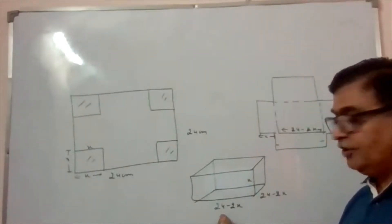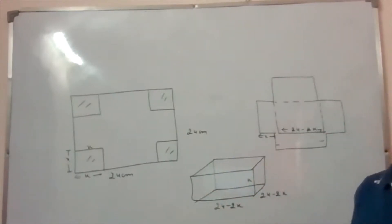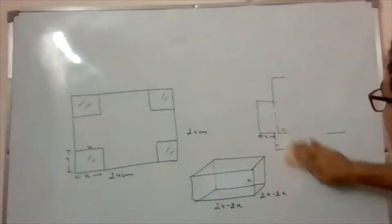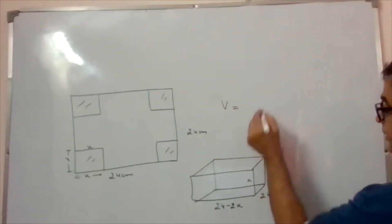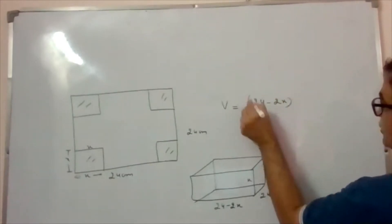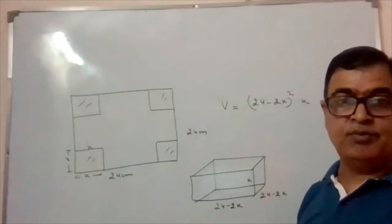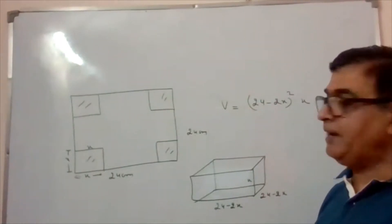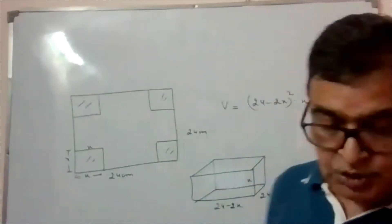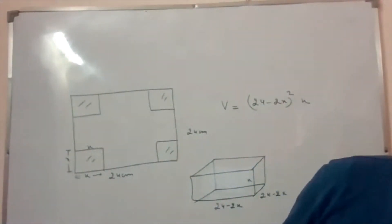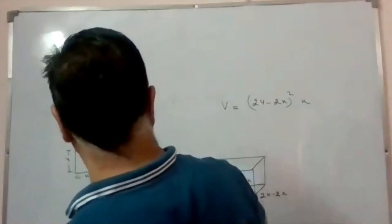The volume of the box will be (24 − 2x) × (24 − 2x) × x, which simplifies to (24 − 2x)² × x. This is the volume we have for the open box, and we want this volume to be maximum. We need to find the dimension x of the square cut from each corner.